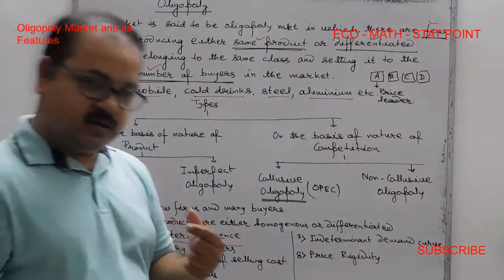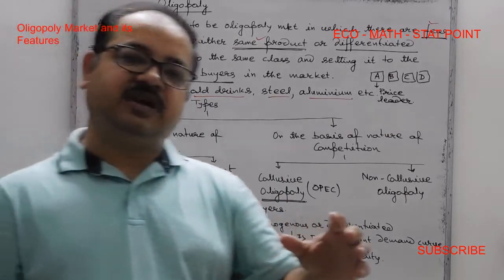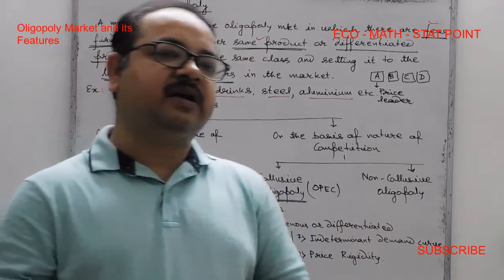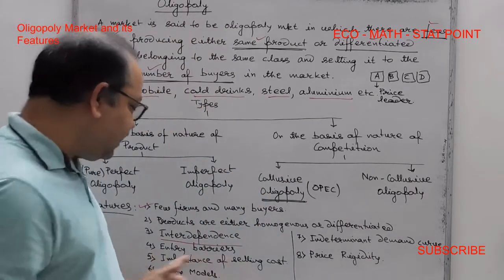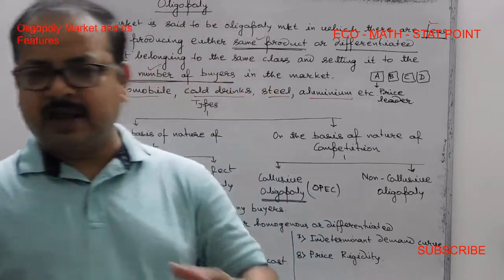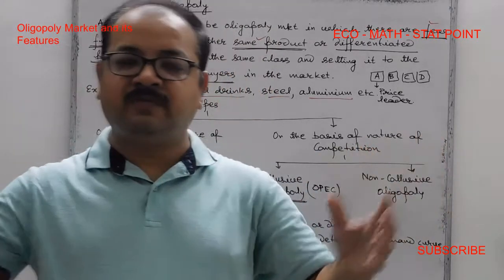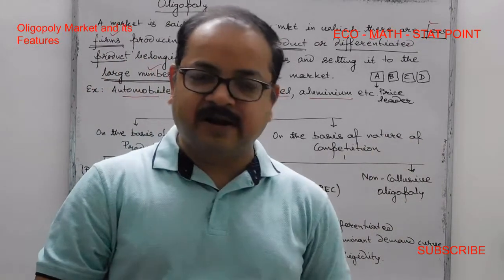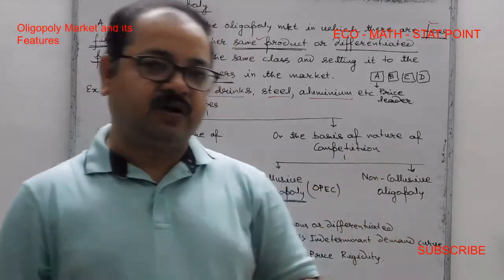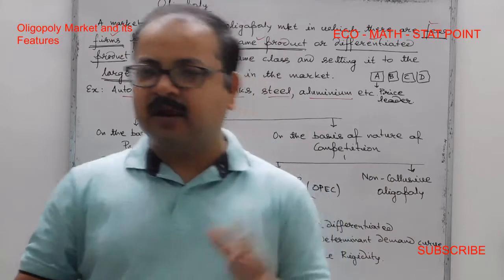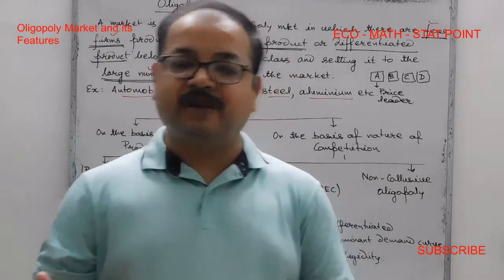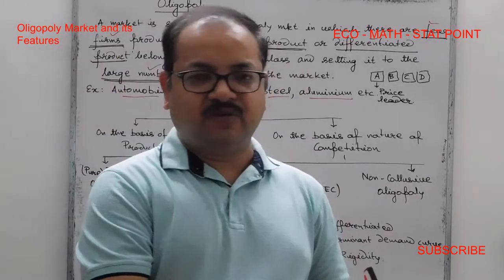The fourth feature is entry barriers. There are significant entry and exit restrictions in the oligopoly market. New firms face barriers such as high setup costs and strong established brands, making it difficult to enter the market.